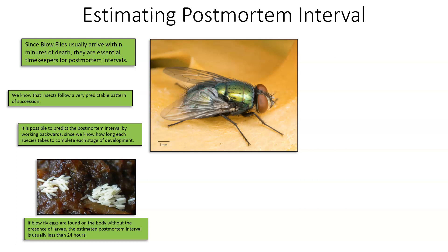A couple of different examples: if blow fly eggs are found on the body without the presence of larvae, the estimated post-mortem interval is usually less than 24 hours, because we know that it takes roughly 24 hours for eggs once laid to hatch into first instar larvae. So if we just find eggs and no instars, we know we have to be within that first 24 hours.